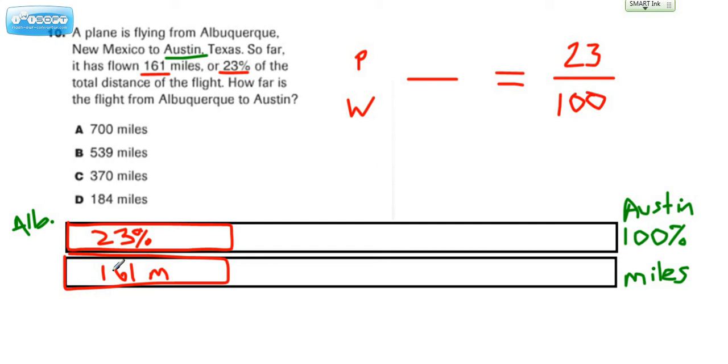And this 161 miles is not the entire trip. That's what we're trying to figure out. We're trying to figure out the whole trip. So let's put a W and we'll put this number in for the part.